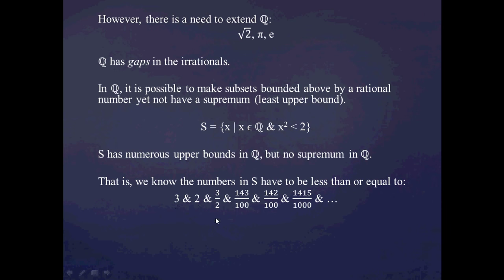I said before that 2 is an upper bound, and I can keep considering rational numbers slightly less than the previous one. So I'm at 2, then 3/2 is slightly less than 2 and still an upper bound since (3/2)² is still greater than 2. I can keep going to the left, inching toward the square root of 2 — considering numbers like 143/100, which still squares to something greater than 2, then 142/100 or 1415/1000.